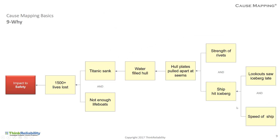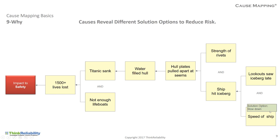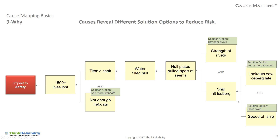You can even add speed as a cause of why the ship wasn't able to turn, and the lookout saw the iceberg late because there were no binoculars — so the Titanic analysis expands into much more detail. This is now a 9Y with three parallel relationships in it. The whole point is that breaking a problem down into its causes will reveal different solution options to mitigate risk. On this particular incident: you can slow down to mitigate risk (an operational decision), add more lifeboats (a safety precaution), add more lookouts to identify icebergs earlier, or put in stronger rivets (a design issue). The question is: is this a management issue on speed, an operator issue with the lookouts, or a design issue with the rivets? On this simple 9Y, the answer is yes — it's all of those.